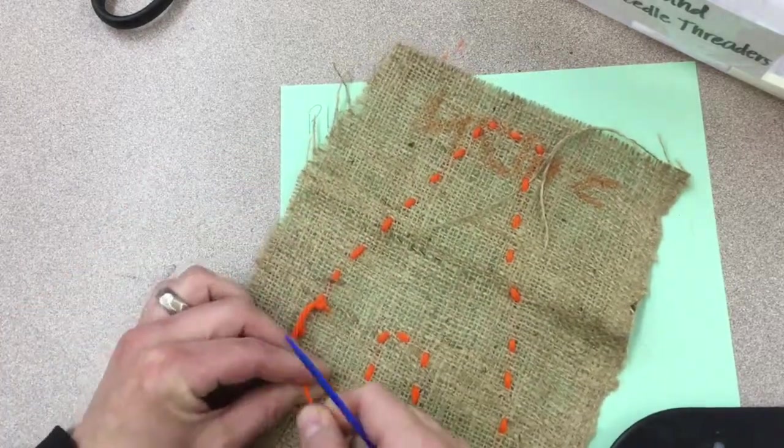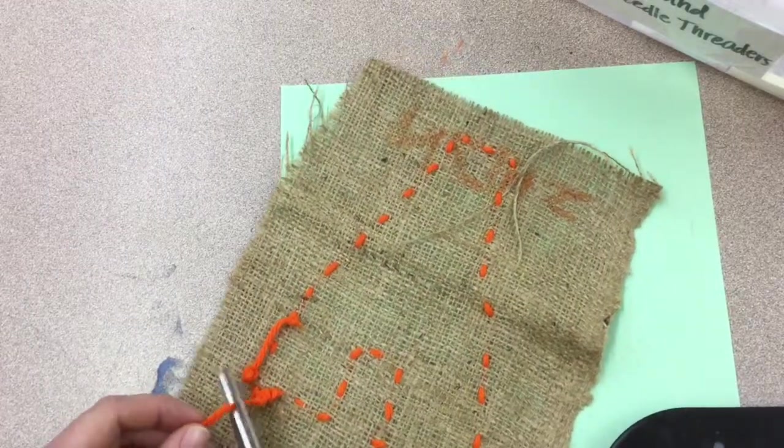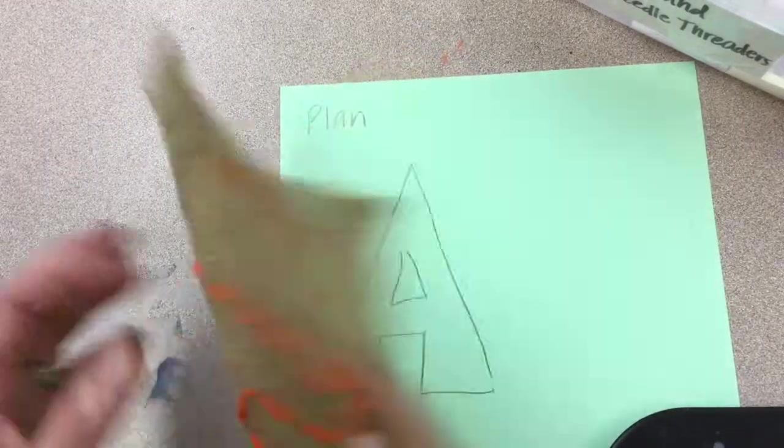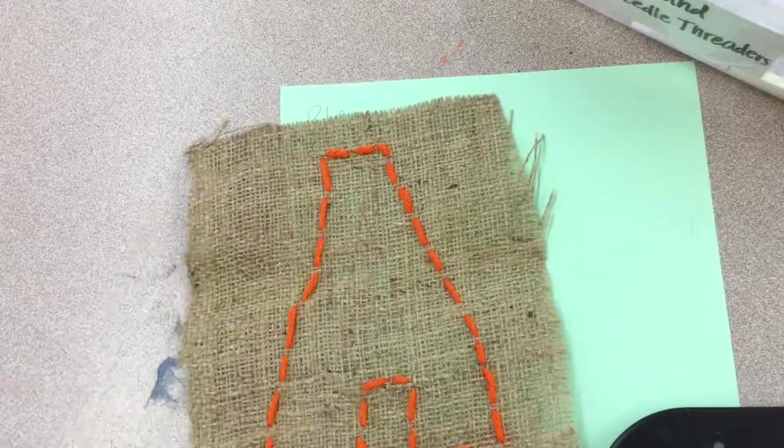Now I can cut my yarn just above that knot, and I'm ready to either change colors or move my needle and start sewing the inside of my letter A.